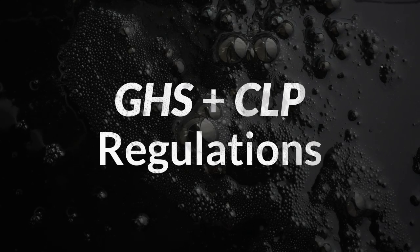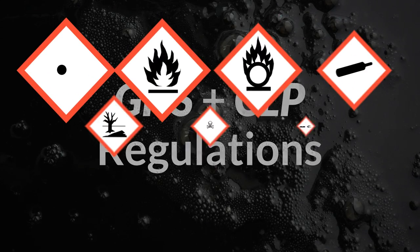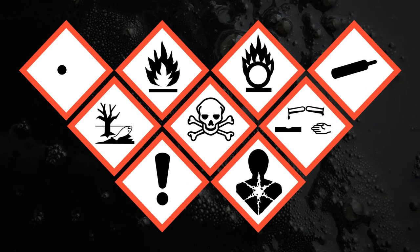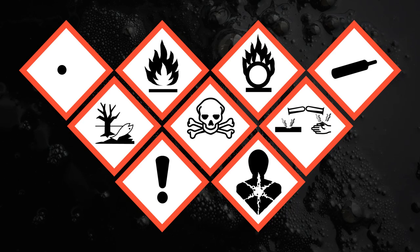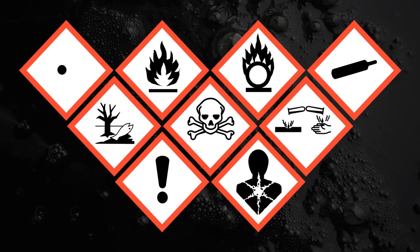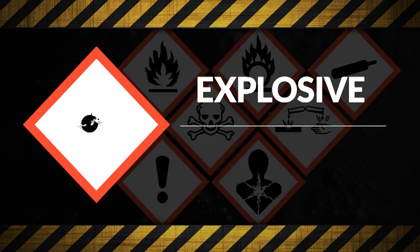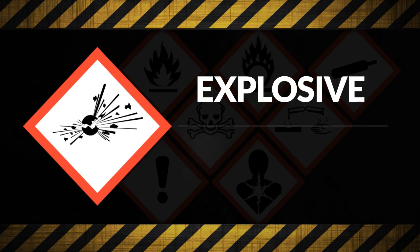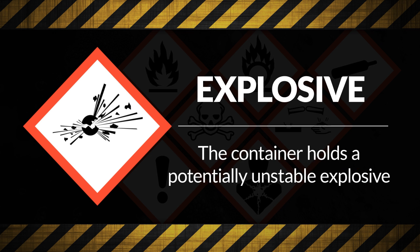The GHS and CLP regulations use various symbols to identify the hazards posed by different chemicals. These are explosive, which confirms the container holds a potentially unstable explosive.